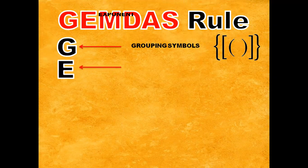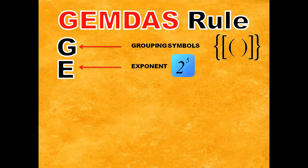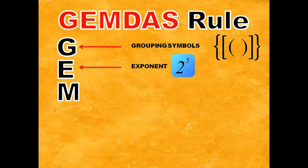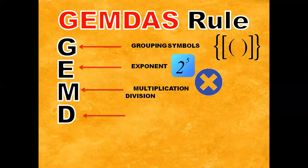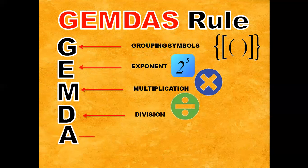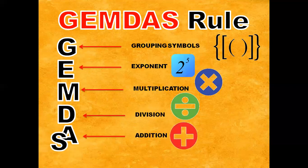E stands for exponent — in this case, 5 is the exponent. M stands for multiplication. D stands for division. A stands for addition. And S stands for subtraction.